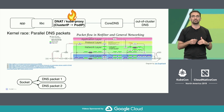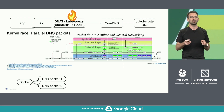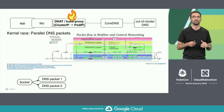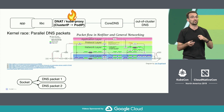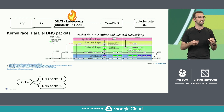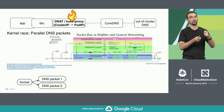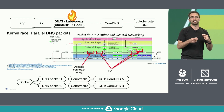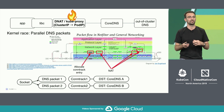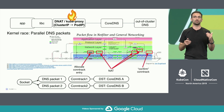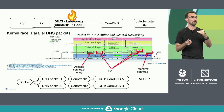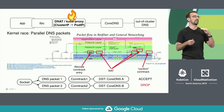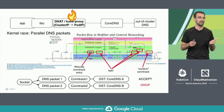The kernel also has this race where parallel DNS queries, which actually happen in practice on Kubernetes clusters, cause some packets to be dropped. For example, if a single socket makes two DNS requests, those race through the kernel, DNAT might assign them to different replicas — CoreDNS replica A and B — and the first packet to win the race gets confirmed as the authoritative mapping for the connection, and the other packets just get dropped.